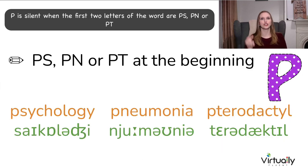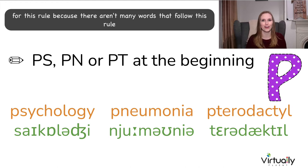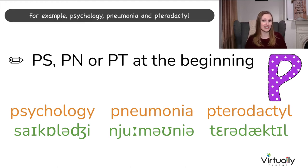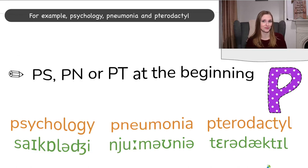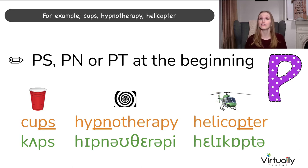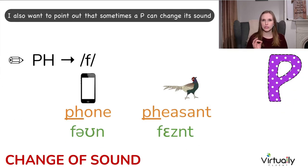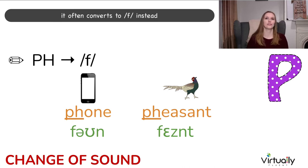P is silent when the first two letters of a word are PS, PN, or PT. Most English teachers use the same example words because there aren't many that follow this rule — for example: psychology, pneumonia, and pterodactyl. But if we have PS, PN, or PT in the middle or at the end of a word, it will be pronounced — for example: cups, hypnotherapy, helicopter. Two random words with a silent P are receipt and coup. Also, P can change its sound when next to an H, often converting to F — for example: phone and pheasant.